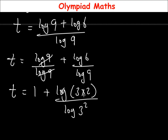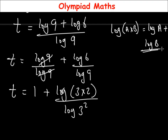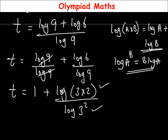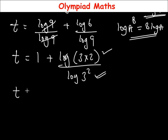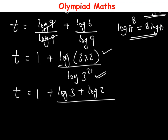We're going to introduce that same rule: if you have log of a times b, this equals log of a plus log of b. Also the second rule: if you have log of a raised to power b, power b then becomes b times log of a. Applying both rules here, the value of t becomes 1 plus log 3 plus log 2, all over 2 times log 3.